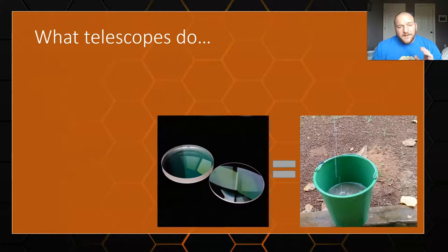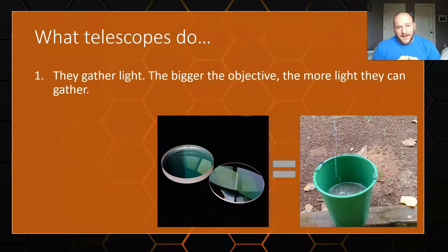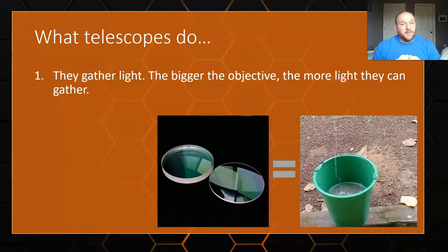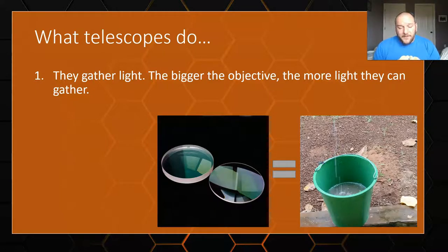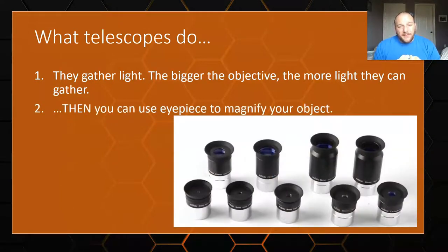Recall that telescopes aren't primarily there for magnification — the big thing they do is gather light. Lenses act a lot like buckets in the rain. A bigger bucket gathers more water, and if the object is brighter it's like raining more, giving you more light. But brightness isn't something we can control. What we can control is how big the objective is — the bigger the objective, the more light we can gather, and then we can magnify those objects.